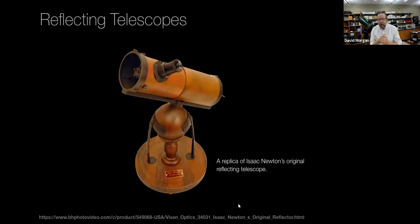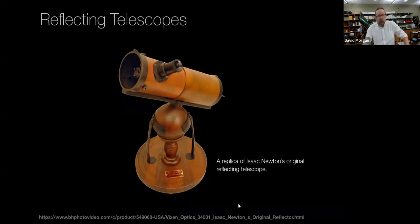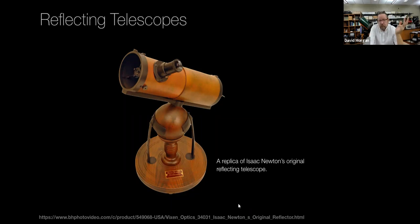It was Isaac Newton, who published Optics around 1699-1700, who worked on the idea of a different kind of telescope in the 1680s. This is called a reflecting telescope, or a Newtonian telescope. A Newtonian reflecting telescope uses a mirror instead of a lens to focus and gather light and create the image that you then magnify with an eyepiece.